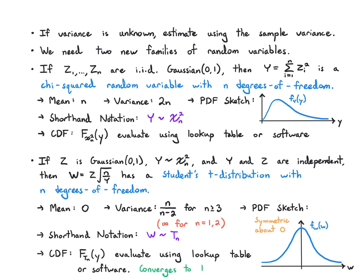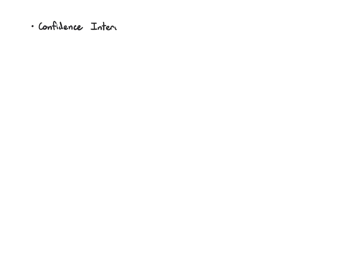The t-distribution converges to a Gaussian CDF as n goes to infinity — it has heavier tails for finite n, but as n grows larger, the Gaussian becomes a better and better approximation. We'll use these distributions first to come up with a confidence interval for the mean when we don't know the variance in advance.